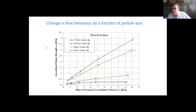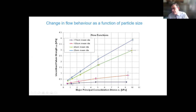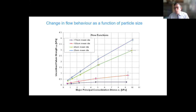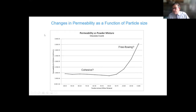Using measurements from a shear tester, if you prepare samples with different mean particle diameters — say 20, 40, 100, and 170 microns — the flow functions follow a general trend: coarser material has the least strength and finest material has the greatest strength. Materials with a shallow flow function are free-flowing and easy to work with; materials with a steeper flow function are more cohesive and more problematic when handled through standard industrial equipment.